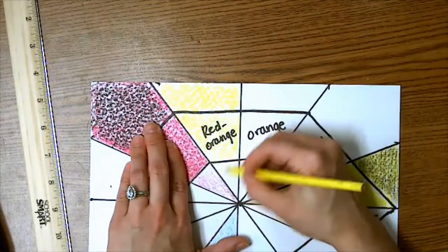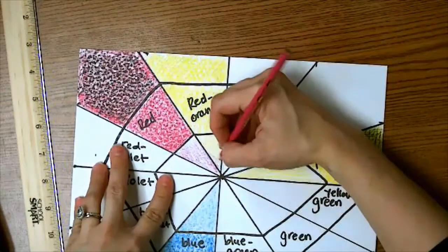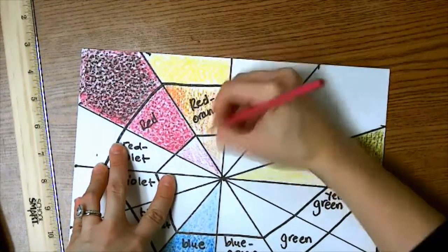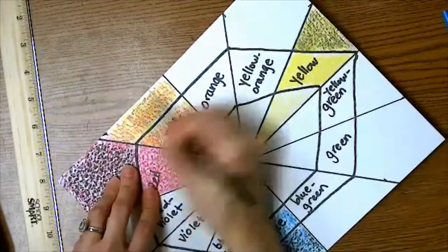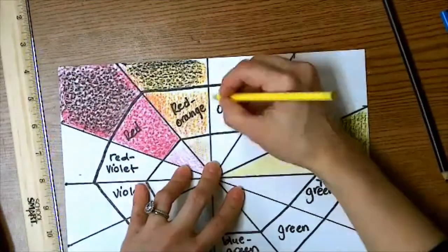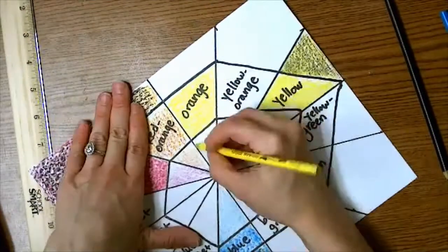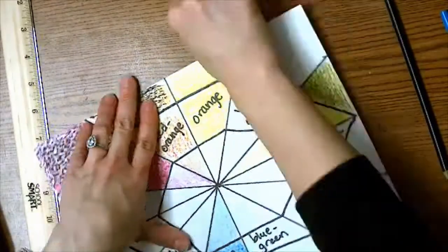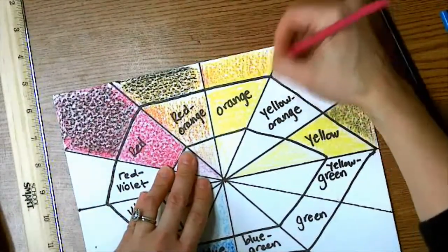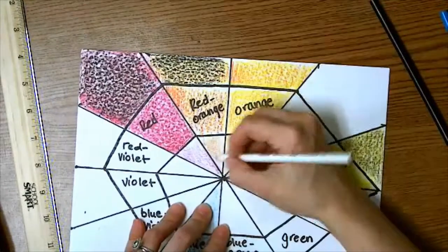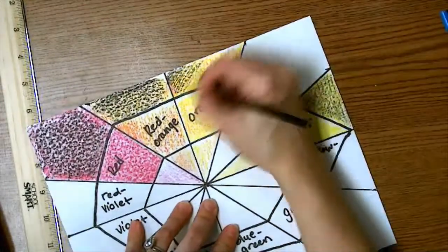Now I'm going to be blending colors to create my tertiary colors and my secondary colors. So I started with the tertiary color red orange, and I'm layering the lightest color first, always the lightest color first. So I started with yellow because it's significantly lighter than magenta.